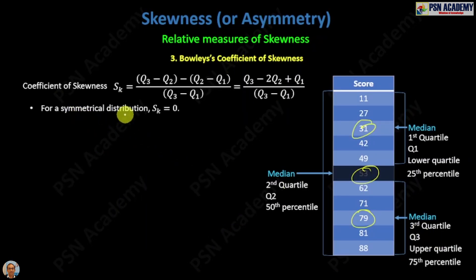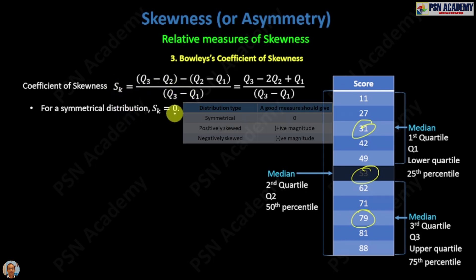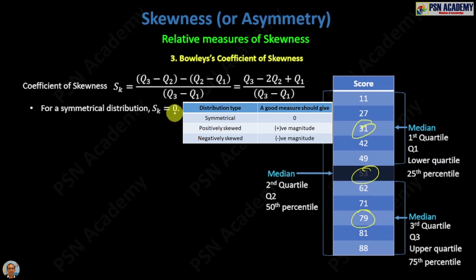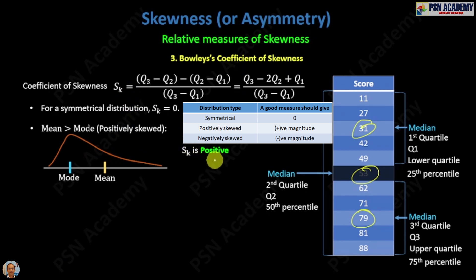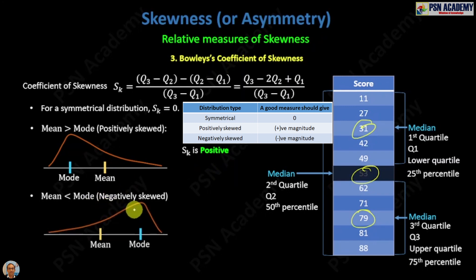For a symmetrical distribution, this formula S_k will give you zero — which is our criterion for a good relative measure of skewness. When the mean is greater than the mode, the distribution is positively skewed, and S_k gives a positive magnitude, conforming with our criterion. When the mean is less than the mode, the distribution is negatively skewed, and this measure gives a negative value — so the measure works correctly in all three cases.